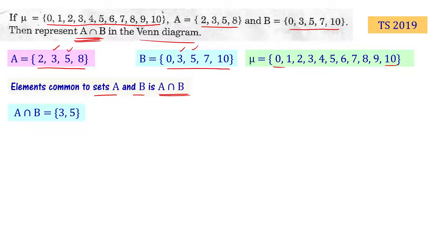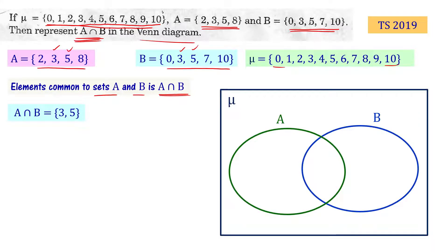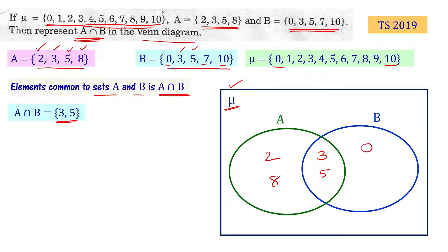Now we want to represent this in a Venn diagram. The universal set μ is represented by a rectangle, set A by a green circle, and set B by a blue circle. A intersection B contains elements 3 and 5, placed in the overlapping region. The elements only in A are 2 and 8; the elements only in B are 0, 7, and 10.